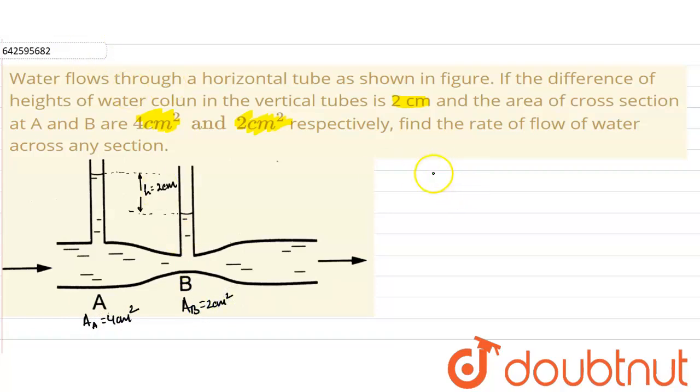applying the continuity equation at point A and point B, we can say that the velocity at point A into cross sectional area at point A will be equal to velocity at B into cross sectional area at B. So, from here, VA·AA = VB·AB. So we get the relation: velocity at B will be equal to 2 times velocity at point A. Let us suppose this is equation number 1.